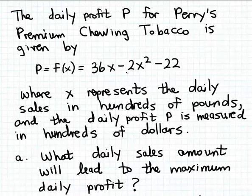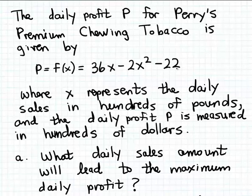In this example, we're going to consider what's known as a profit function and use that profit function to determine the maximum profit from the sales of an item. We're told that the daily profit, which we're labeling P, for Perry's premium chewing tobacco is given by this function formula, where X represents the daily sales for this chewing tobacco measured in hundreds of pounds.